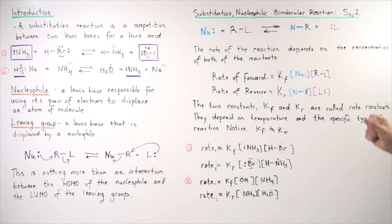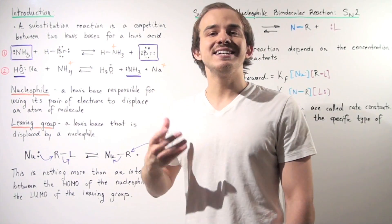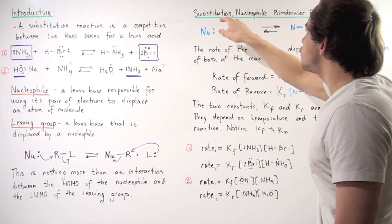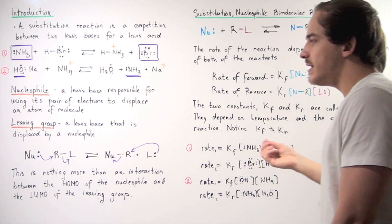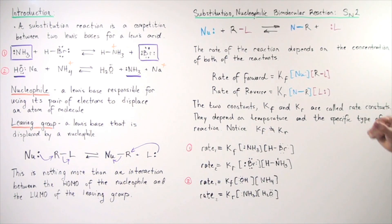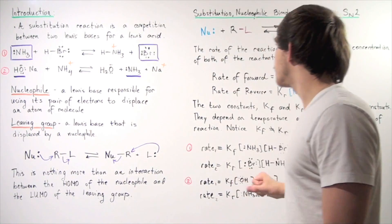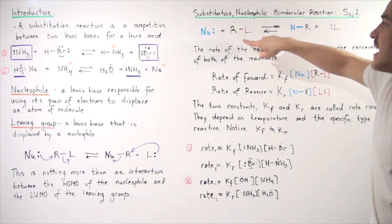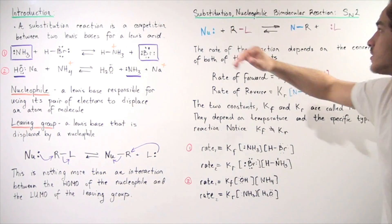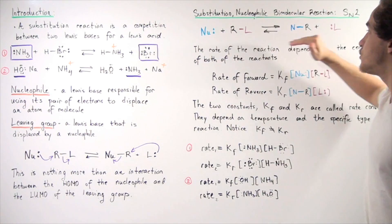Now let's define what an SN2 reaction is. An SN2 reaction is a substitution reaction, but many different types of substitution reactions exist. SN2 is exactly what the name implies: the S stands for substitution, the N stands for nucleophilic, simply meaning there is a nucleophile or Lewis base involved, and it's bimolecular. So this is in fact an SN2 reaction: the nucleophile attacks our R group, taking that R group away and kicking off the leaving group, producing our leaving group and our N-R bond.